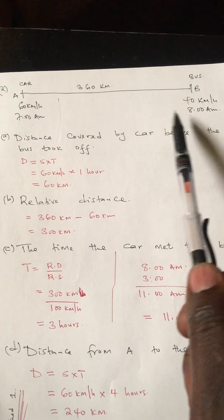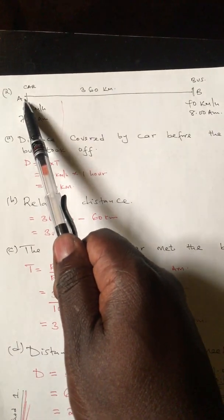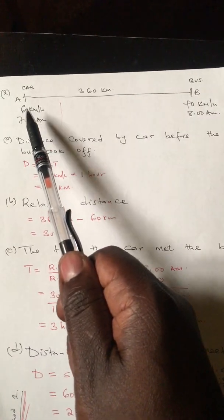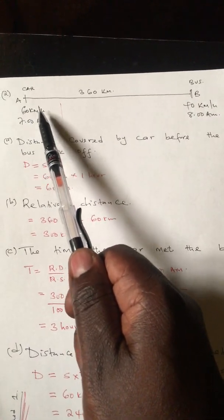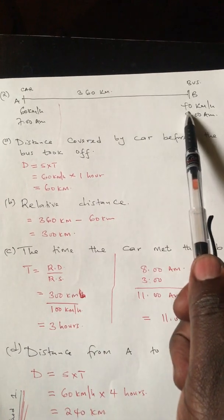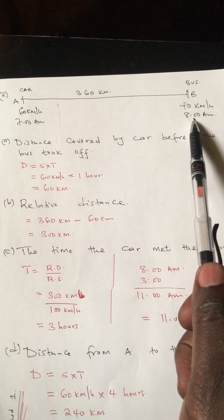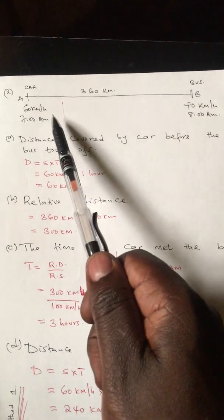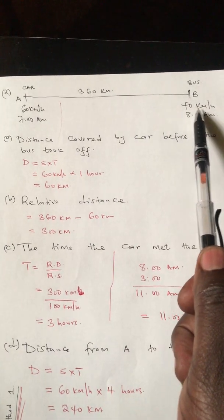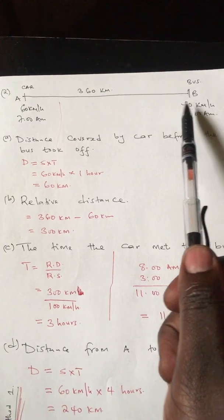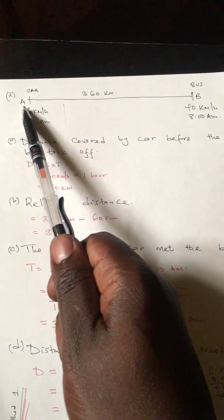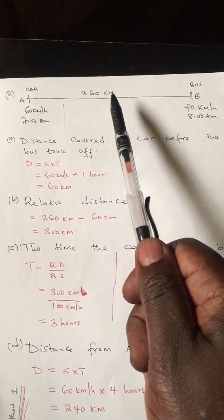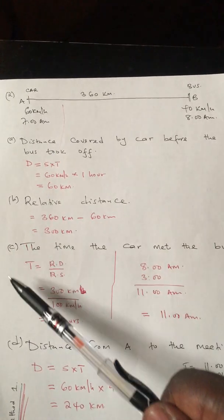The question is: a car left point A for B at 7 a.m. at 60 kilometers per hour. On the same day at 8 a.m., a bus left town B for A at a speed of 40 kilometers per hour. Given that the distance between A and B is 360 kilometers, there are some questions we need to solve.